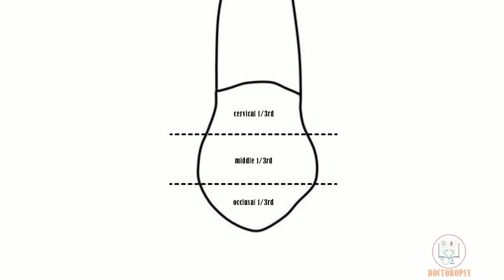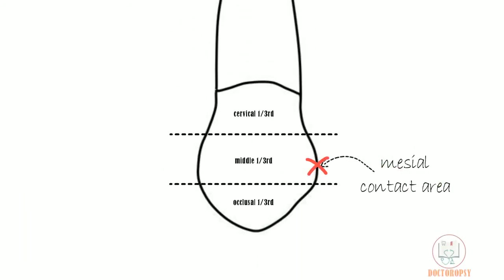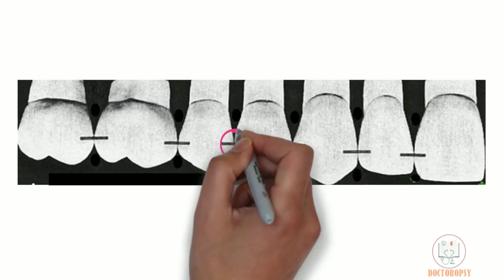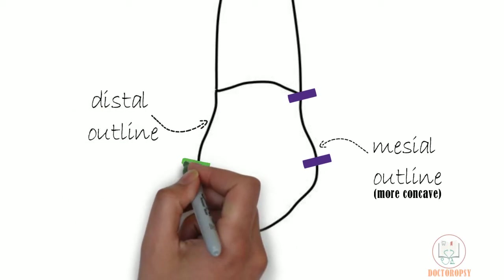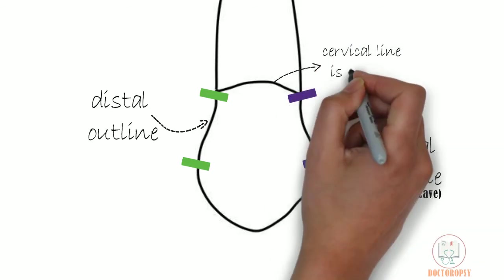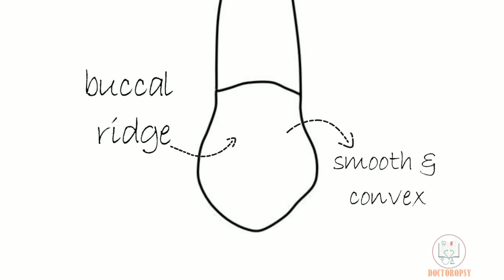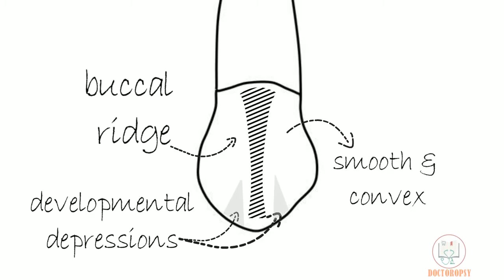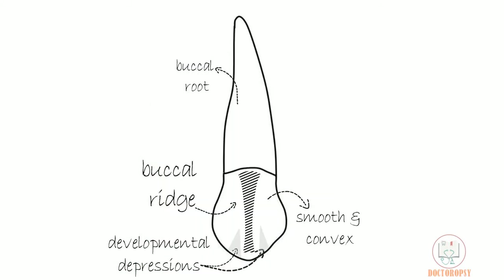Both contact areas of the tooth are at the middle third. The mesial contact area, by which the tooth contacts the canine, is at the center of the middle third, and the distal contact area, contacting the second premolar, is slightly occlusal to the center of the middle third. The mesial outline running from the contact area to the cervix is slightly more concave than the distal outline. The cervical line is convex with convexity towards the root. The buccal surface is smooth and prominently convex due to the buccal ridge running from the buccal cusp tip to the cervical line. Slight developmental depressions are seen mesial and distal to the buccal ridge, demarcating the developmental lobes. Only the buccal root is visible from this aspect, which is smooth and tapering.